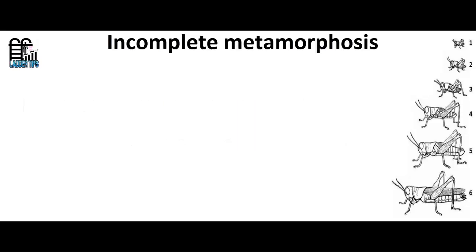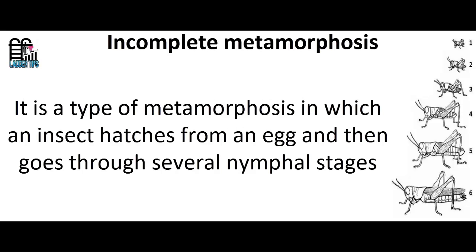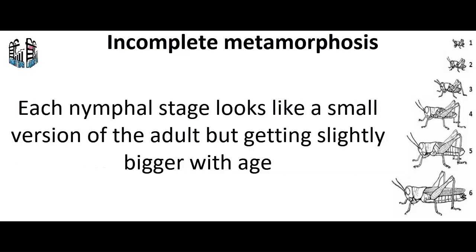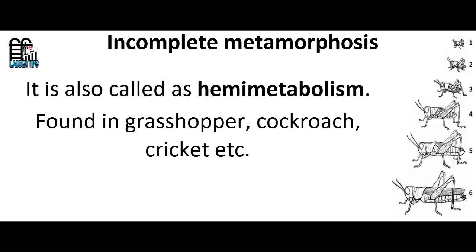Incomplete Metamorphosis is a type of metamorphosis in which an insect hatches from an egg and then goes through several nymphal stages. Each nymphal stage looks like a small version of the adult but gets slightly bigger with age. It is also called hemimetabolism.